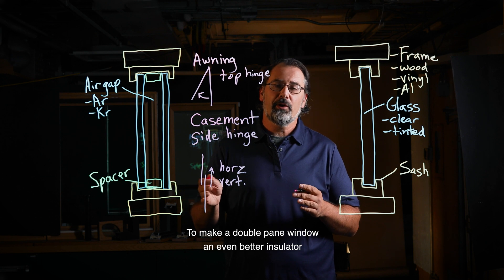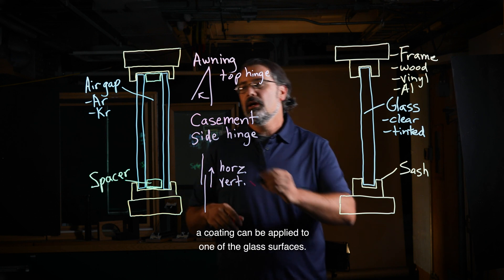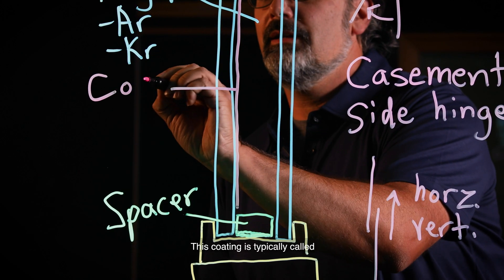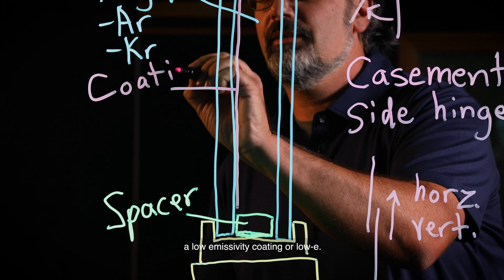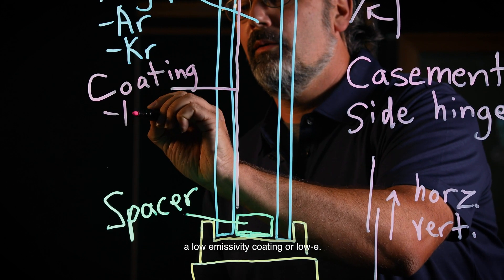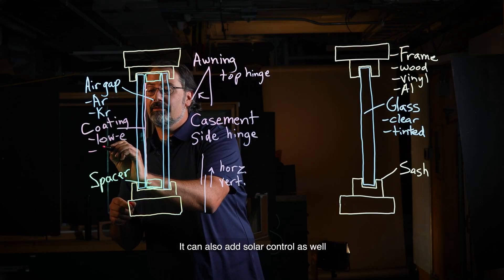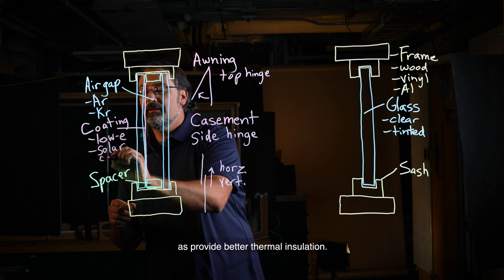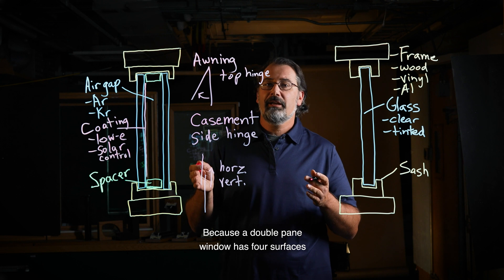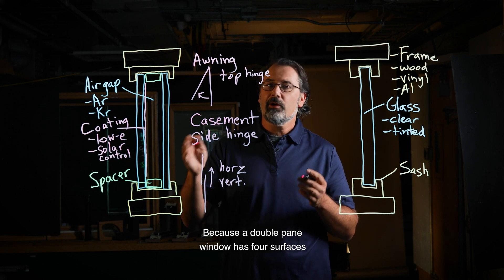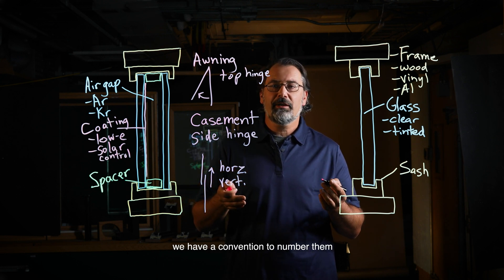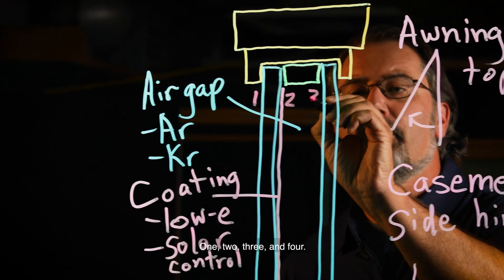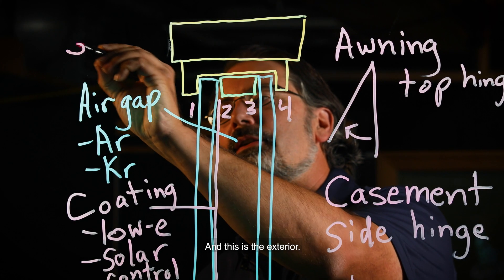To make a double pane window an even better insulator, a coating can be applied to one of the glass surfaces. This coating is typically called a low emissivity coating, or low-E. It can also add solar control as well as provide better thermal insulation. Because a double pane window has four surfaces, we have a convention to number them from the exterior to the inside: one, two, three, and four. And this is the exterior.